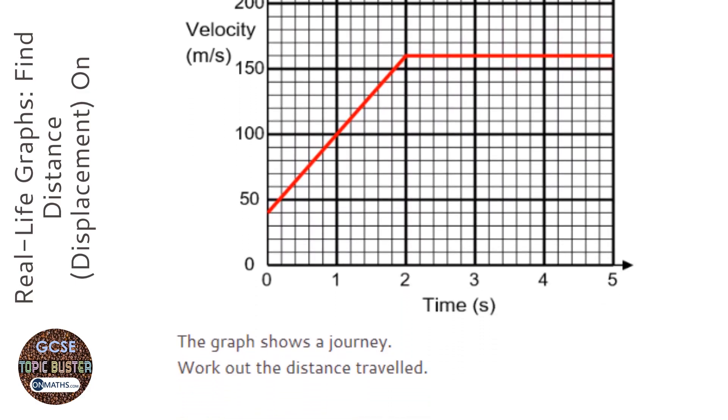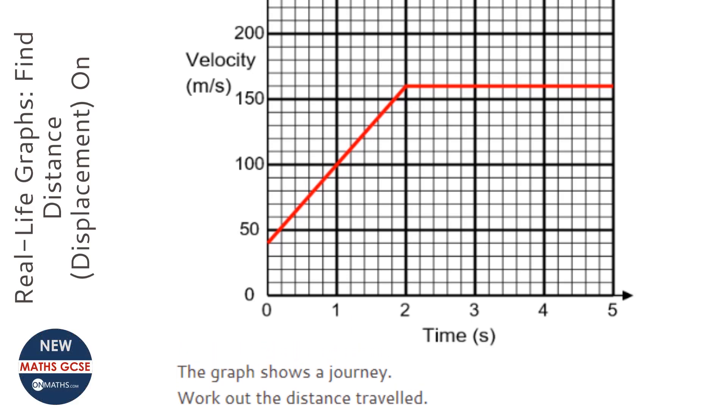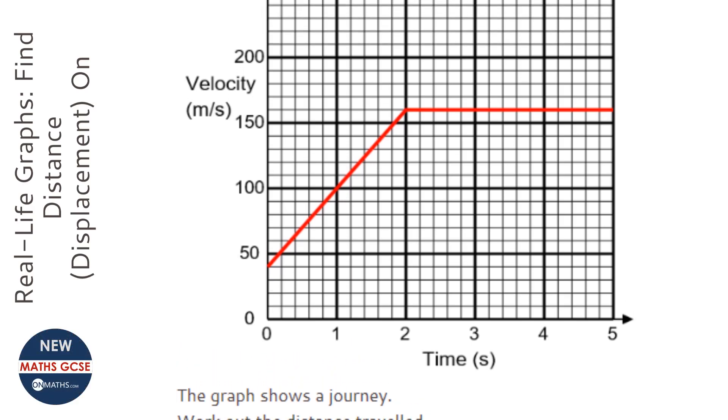Okay, so we're given a velocity-time graph and asked for the distance or displacement. To work that out, you simply work out the area underneath the graph. So if I draw a line down here, we've got two simple shapes.